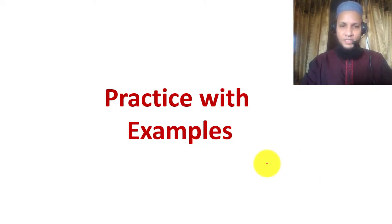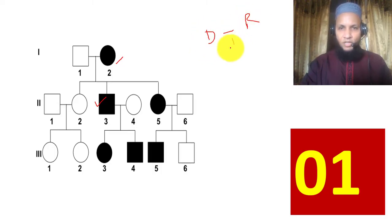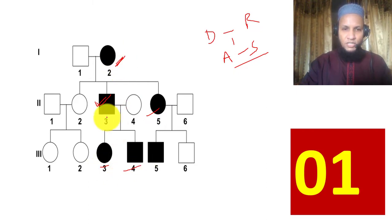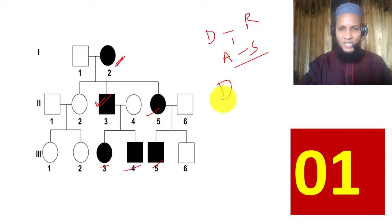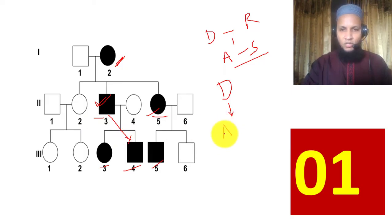Now we will practice 15 examples. Example 1: The affected persons all have at least one affected parent, so there is no skipping of generation — this is a dominant disease. Next, checking sex linkage: both males and females are affected, and there is male-to-male transmission. Therefore this is autosomal dominant disease.